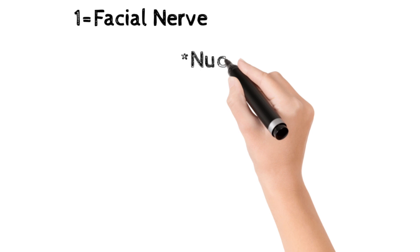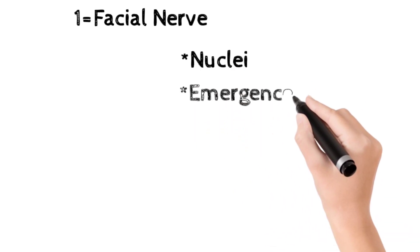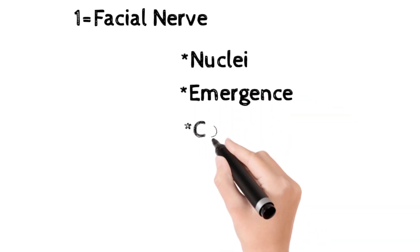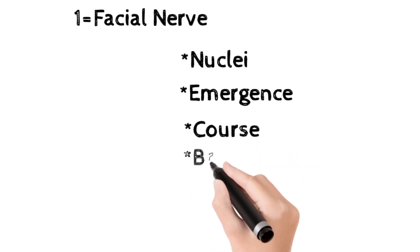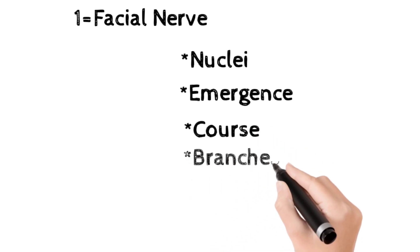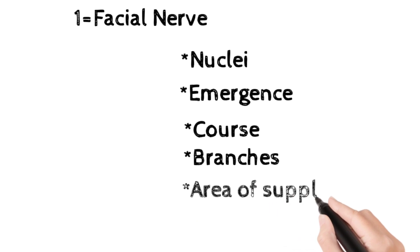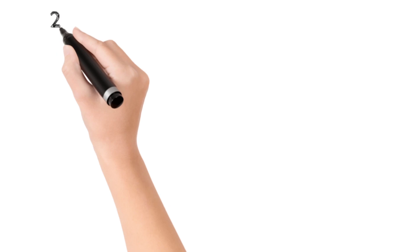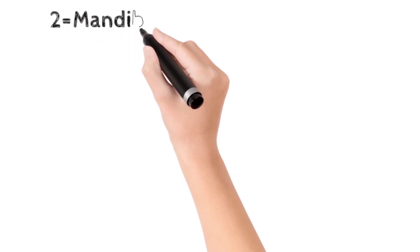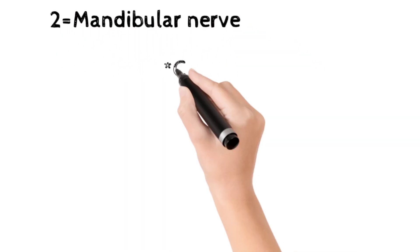The first important topic is the facial nerve. The subheadings in facial nerve are: nuclei of facial nerve, emergence, course of facial nerve, branches, area of supply, and the clinical correlation — Bell's palsy.